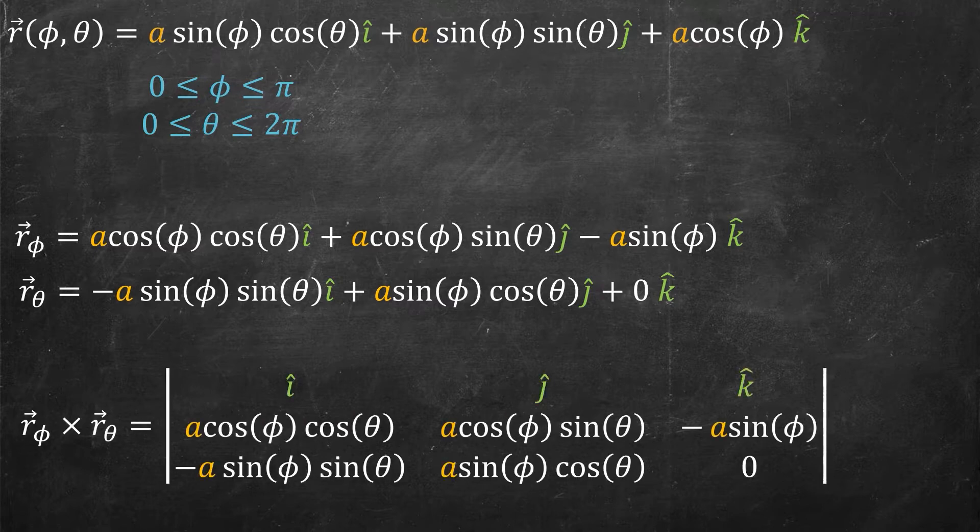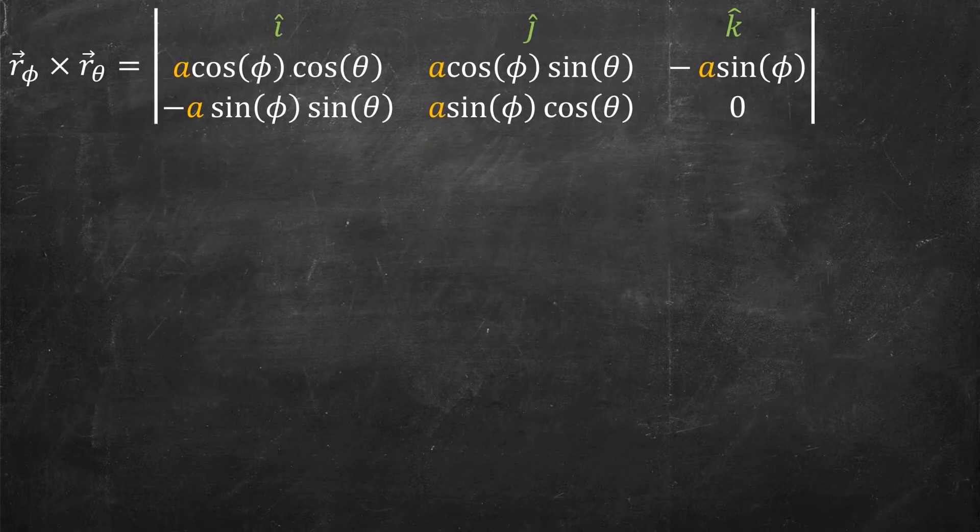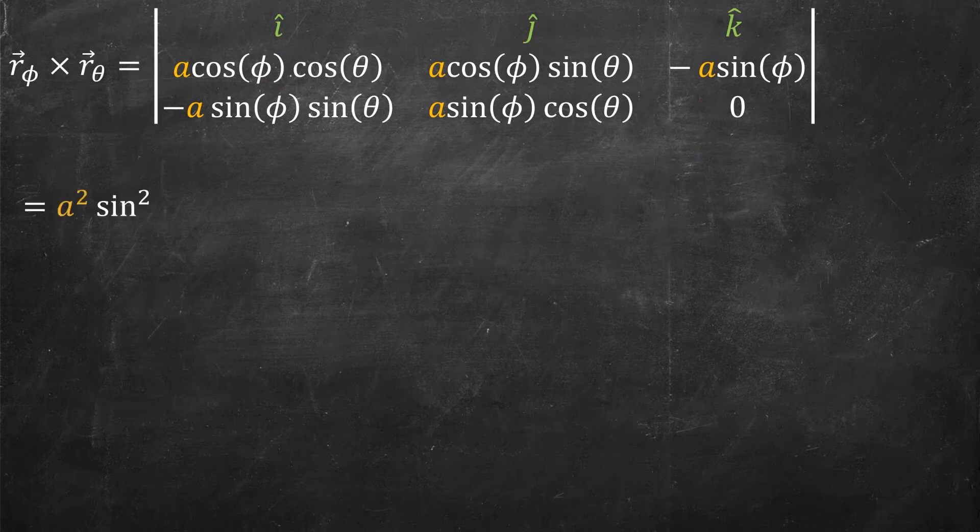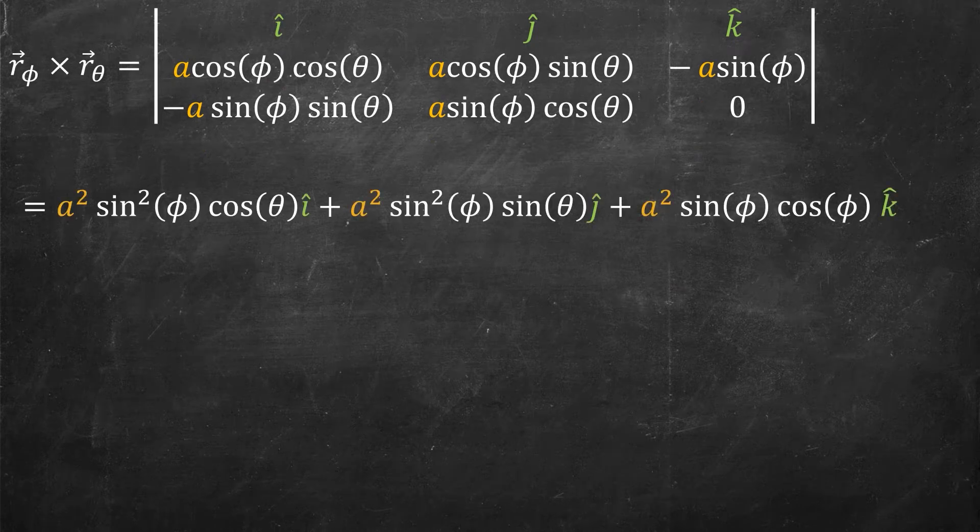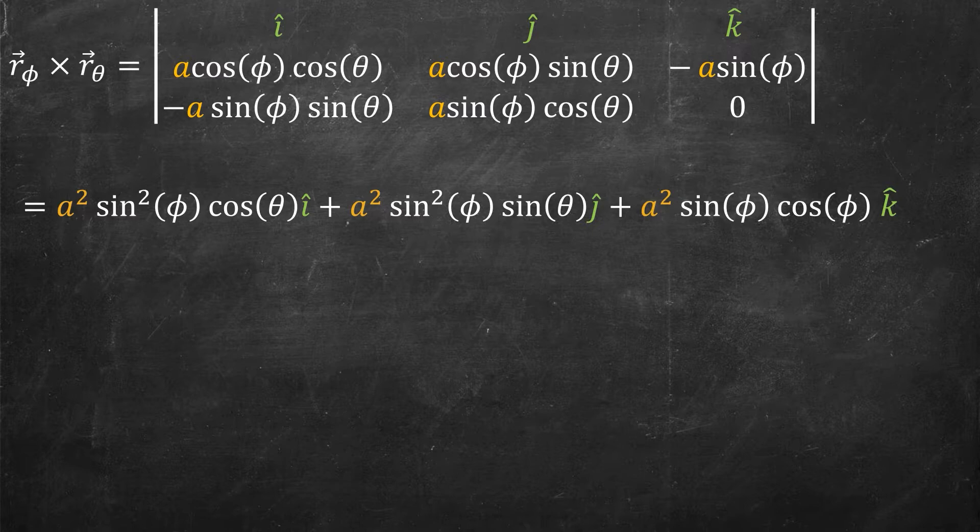Next up I have to take a cross product, cross product is just the determinant, so I write î ĵ k̂ along the top, I write the three different components of r_φ on the second line and the three components of r_θ on the third line. This is a determinant, and I will trust you to be able to compute it out. I'm going to go quite fast through here, but feel free to pause and verify my calculations if you want. The only thing that was a little bit weird is in the k̂, I used the Pythagorean formula. Specifically, I used that cos²θ + sin²θ = 1, that's how I simplified the k̂ expression.